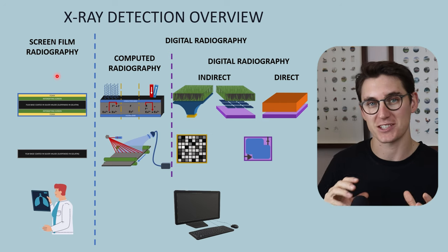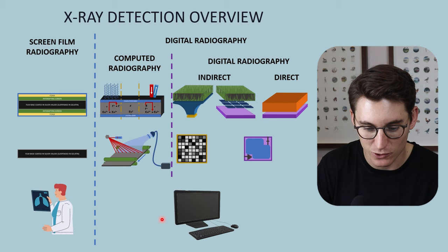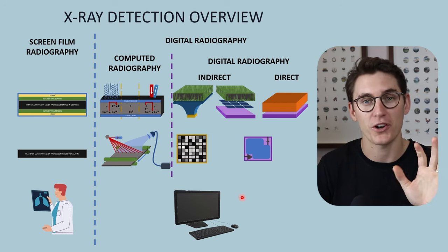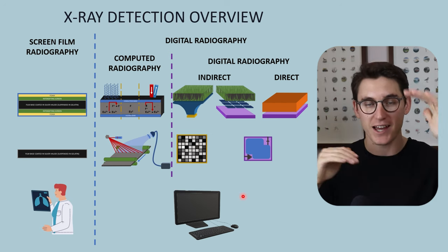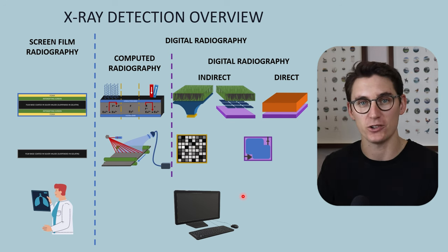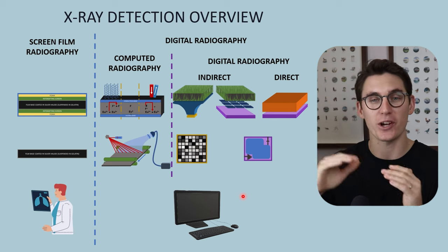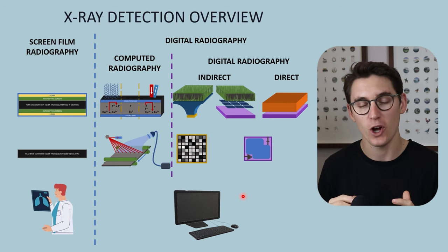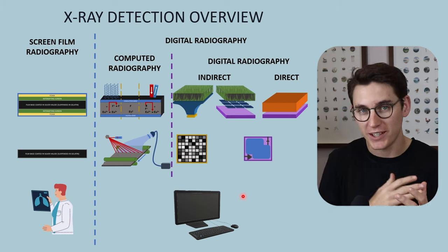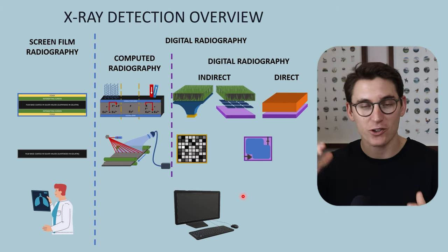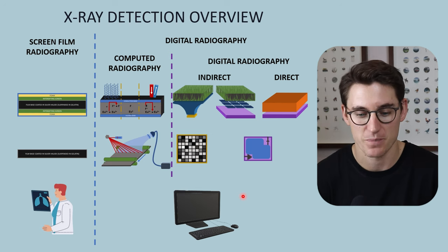Digital radiography systems refer to the digital image that we are creating. The final radiograph will be available on a computer screen, and that radiograph will have pixel values for each one of the pixels in the image. Because those pixels have a grayscale value, we can manipulate the image after we've taken it — we can increase the contrast, increase the exposure, and digitally manipulate that image.